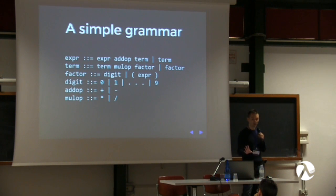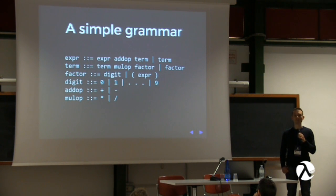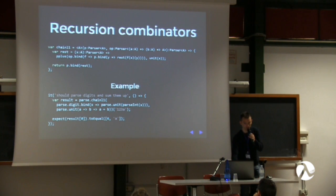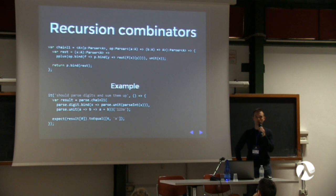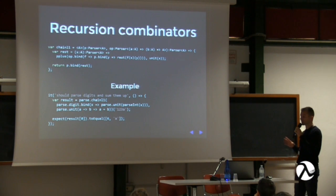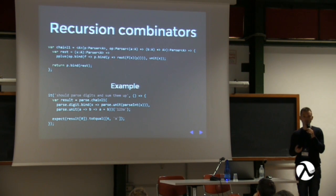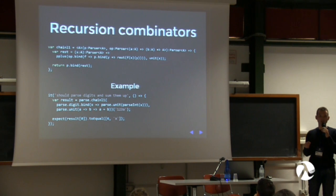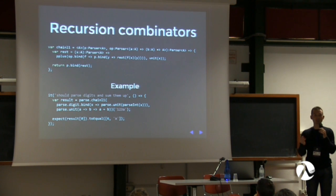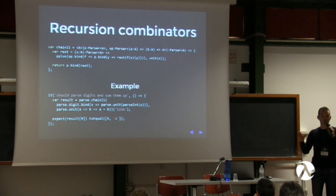Using these combinators, we can implement a parser and evaluator. There's a question: what does it mean for parser OP to parse a function? It means the result of parsing is a function. For example, whenever the parser encounters a plus character, the return value is a function. The generic argument of a parser is what it returns — it takes a string and returns a value of that type — in this case, a function.